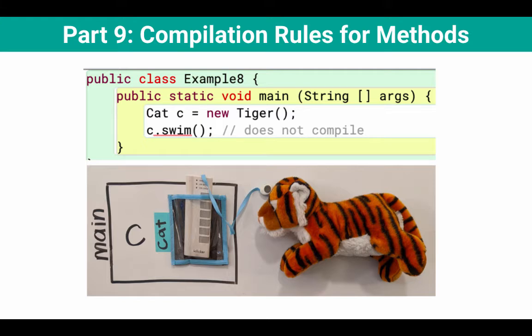We can't use a Cat reference to call a method that doesn't exist in the Cat class. Try and take the perspective of Java: I know I've got this Cat reference — what method should I let it call? Assuming we just have a Cat object, it's going to look in the Cat class for the methods. So only methods accessible from the Cat class are the ones it'll let you call. The type of the variable — in this case, Cat — is what determines whether or not the method call will compile.